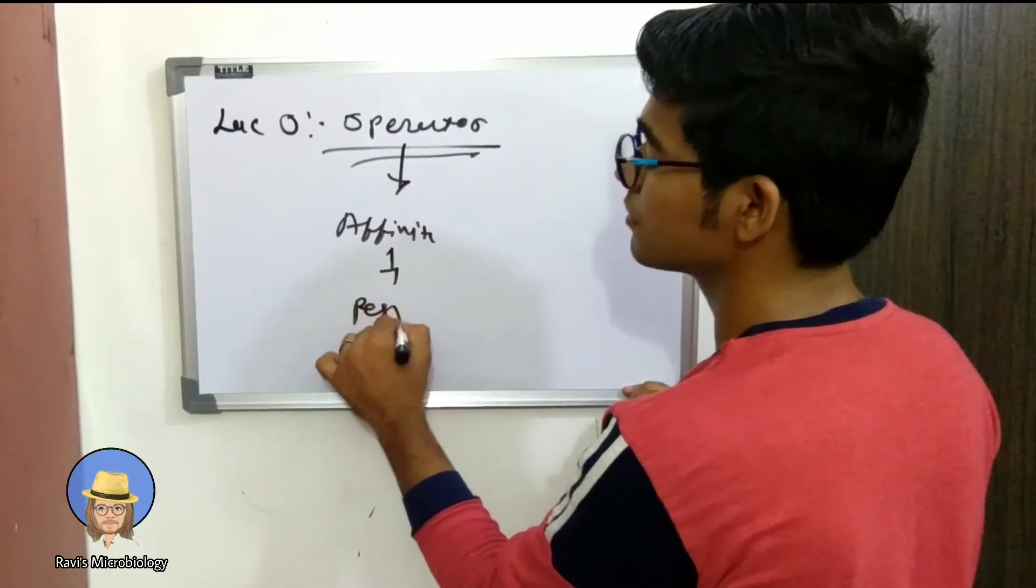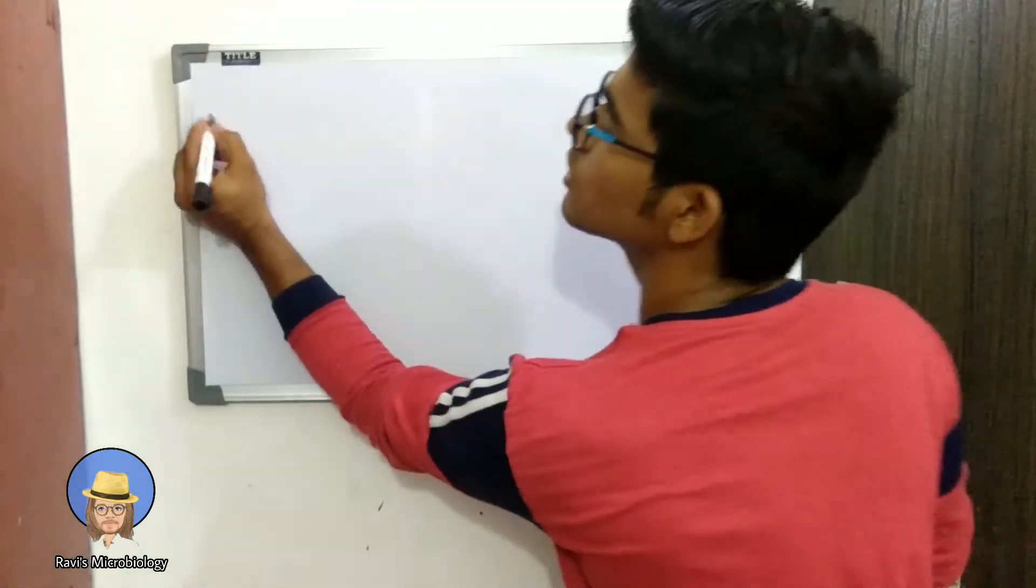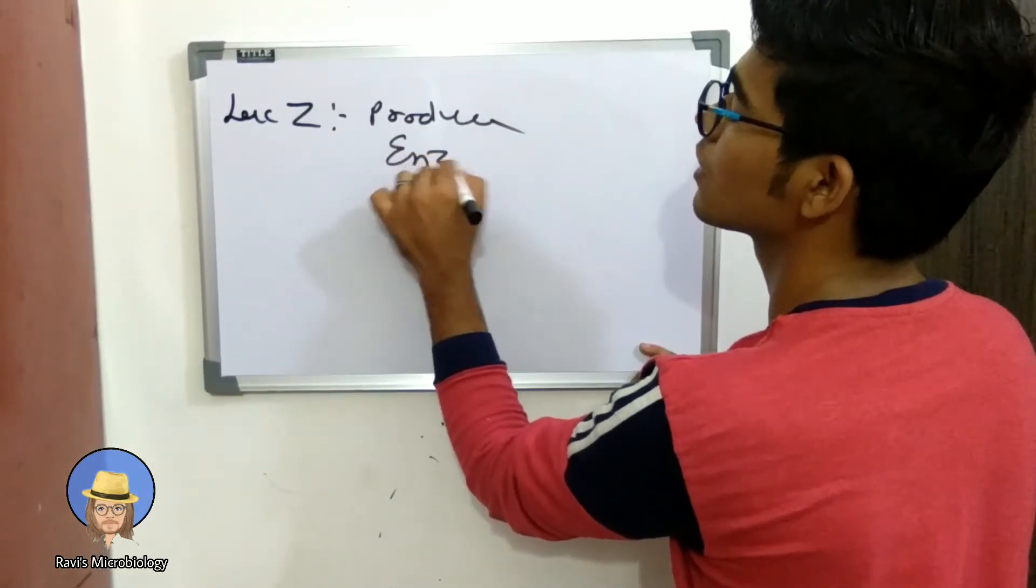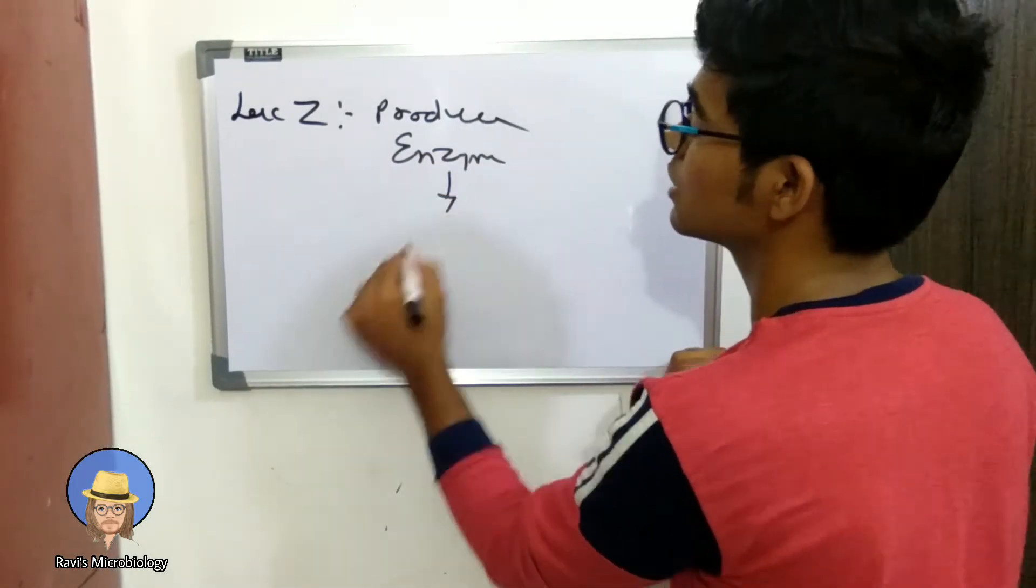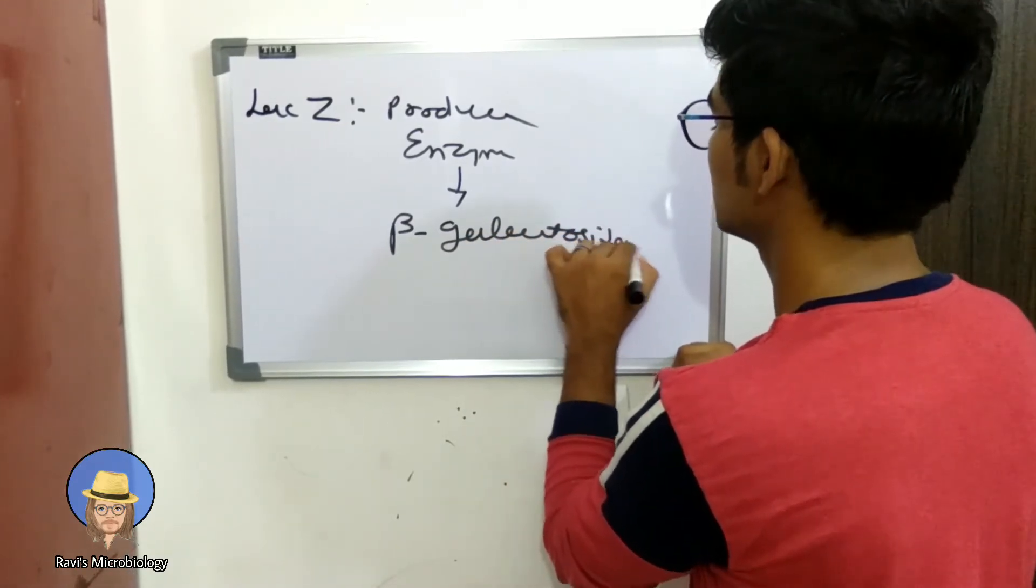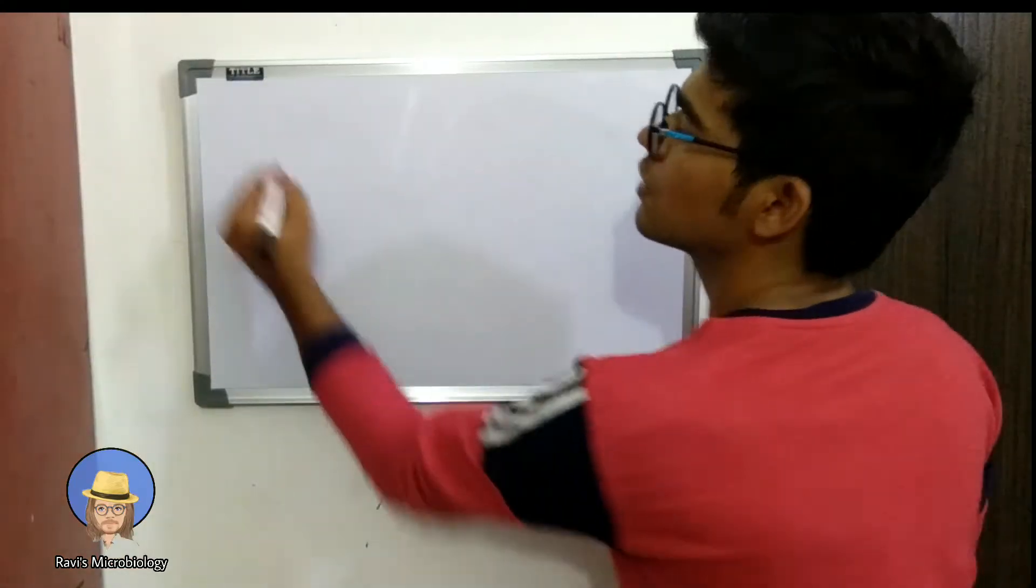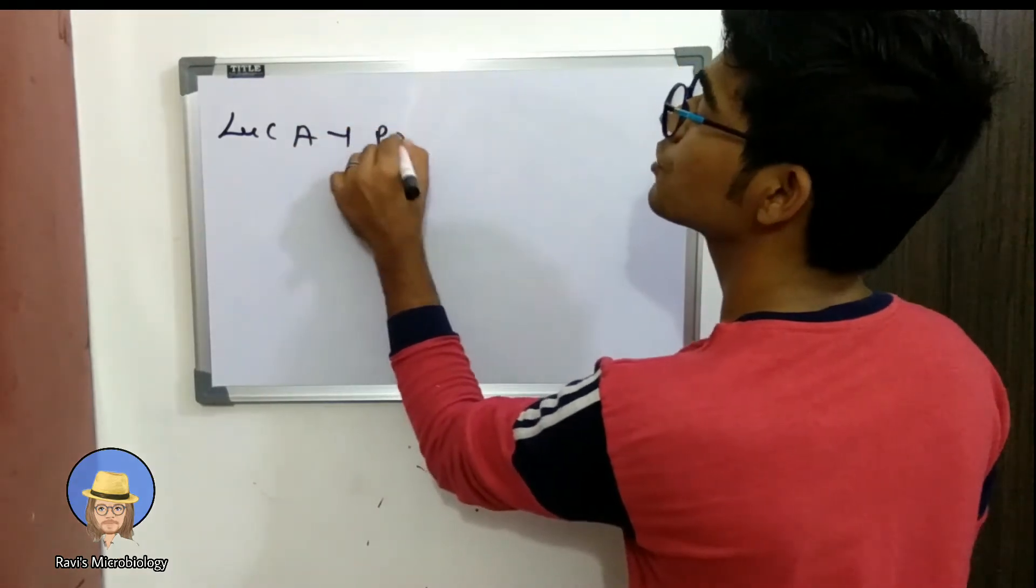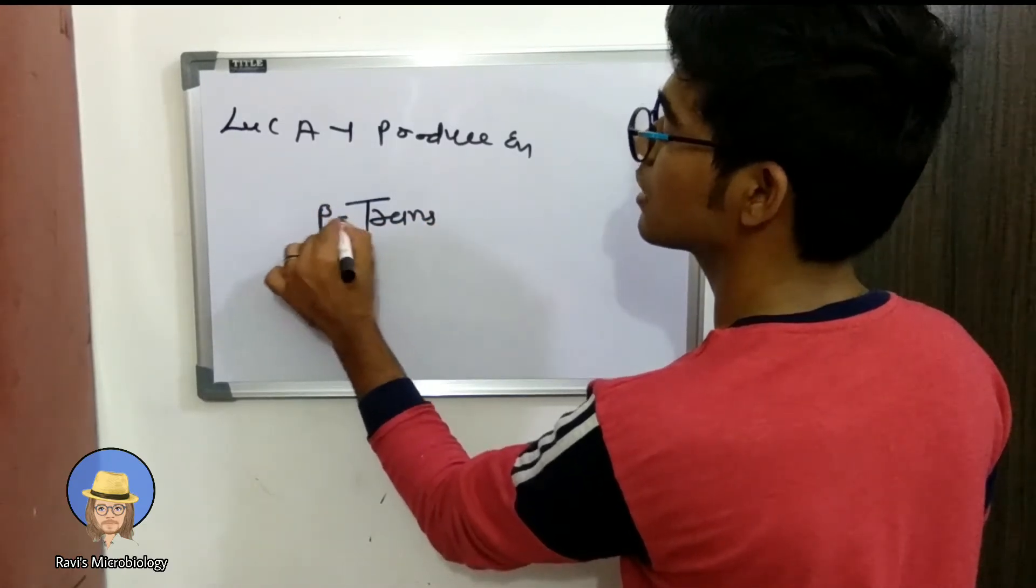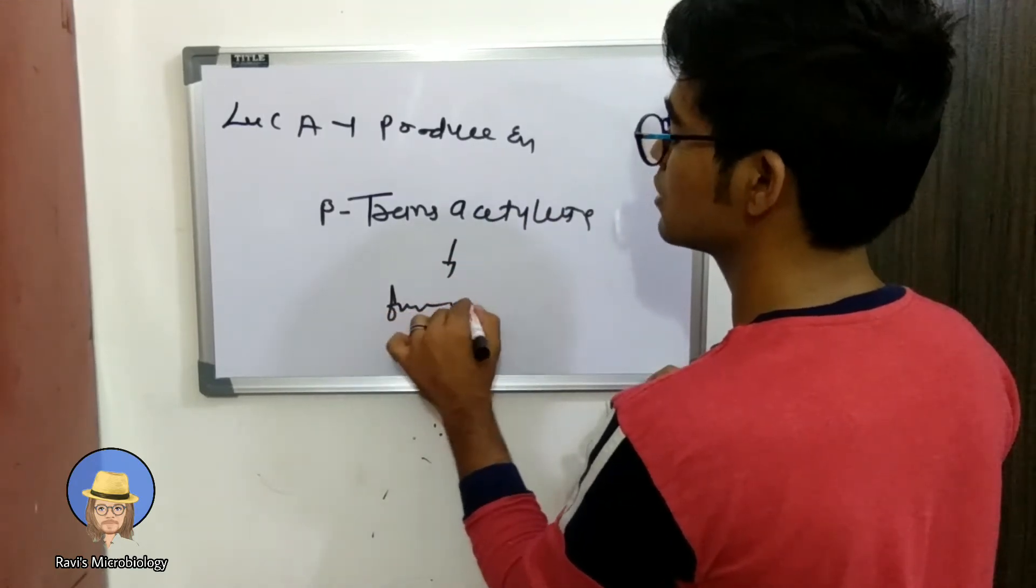The function of lac Z is to produce enzyme beta-galactosidase to metabolize lactose. The function of lac Y is to produce permease enzyme. The function of lac A is to produce trans-acetylase enzyme. The function of acetylase we will see further.